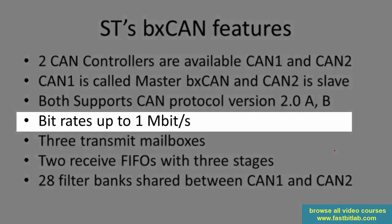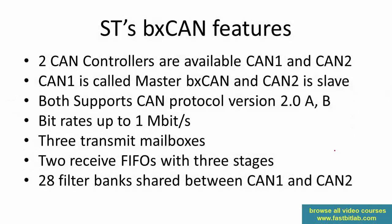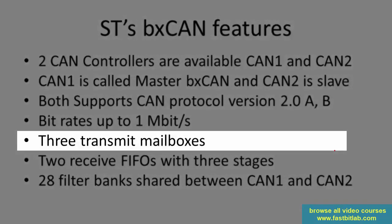You can achieve bit rates up to 1 Mbps, depending on your clock settings — we'll cover that when we do programming. Three transmit mailboxes are available for transmitting CAN messages. Each mailbox is a hardware unit that can hold one CAN message, so at one time you can place three CAN messages in three transmit mailboxes and trigger the transmission.